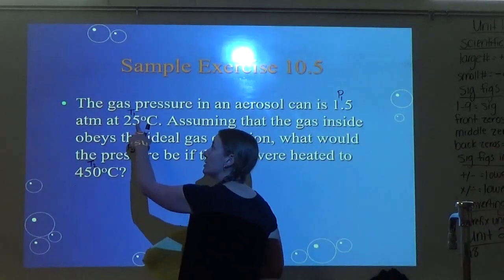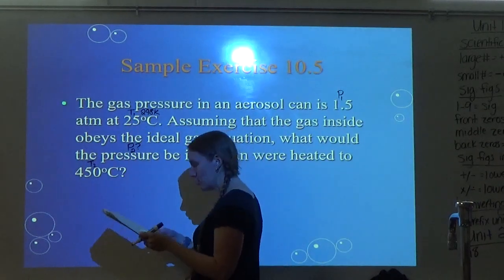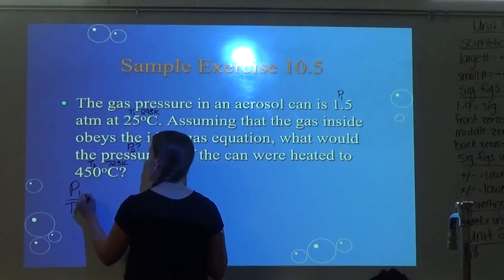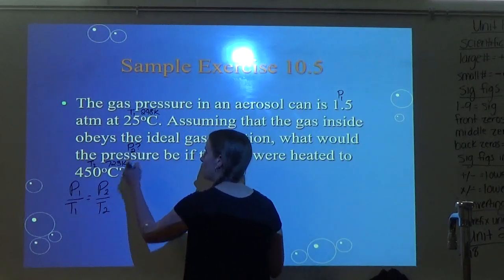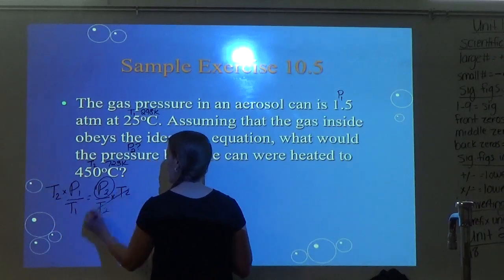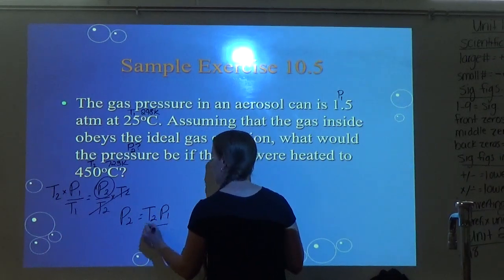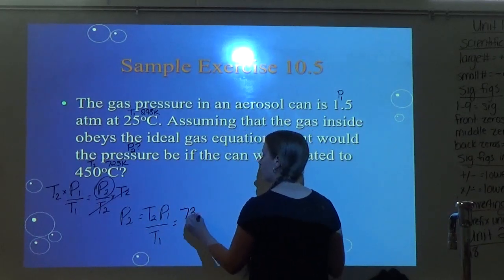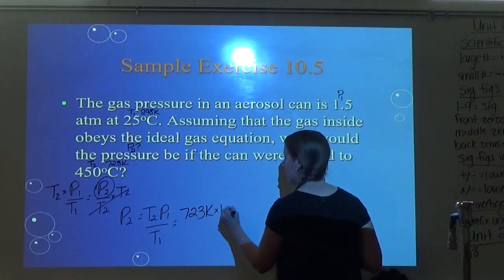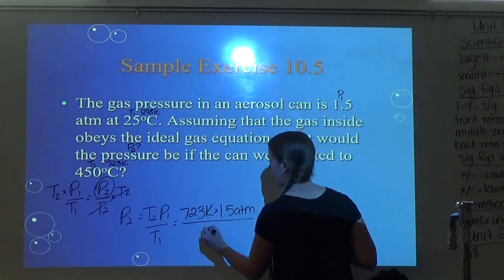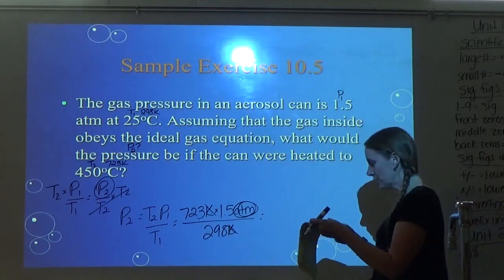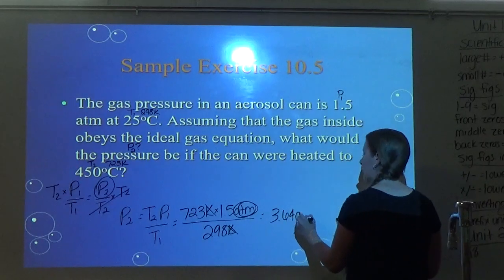Convert to Kelvin: 25°C becomes 298 Kelvin, and 450°C becomes 723 Kelvin. Gay-Lussac's formula is P1 over T1 equals P2 over T2, solving for P2. Multiply both sides by T2: P2 equals T2 times P1 over T1. Plugging in: 723 Kelvin times 1.5 ATM divided by 298 Kelvin. Kelvin cancels, and I get about 3.64 ATM.